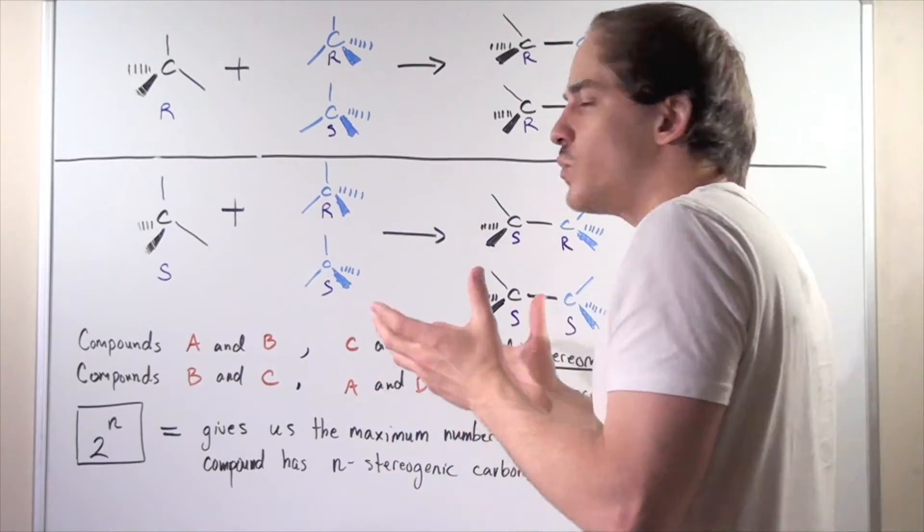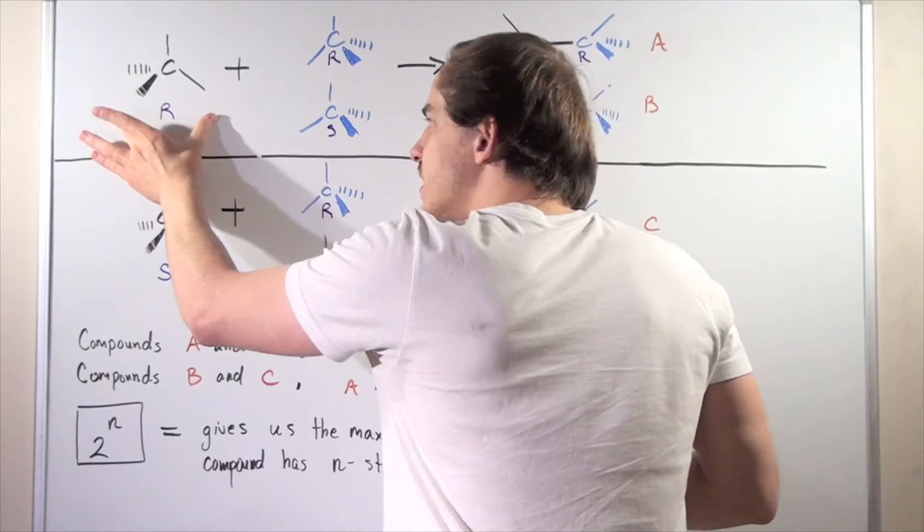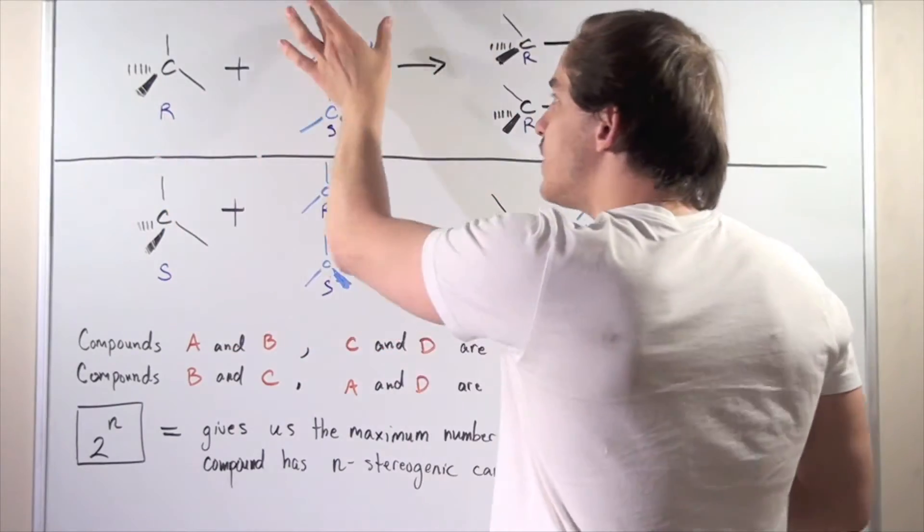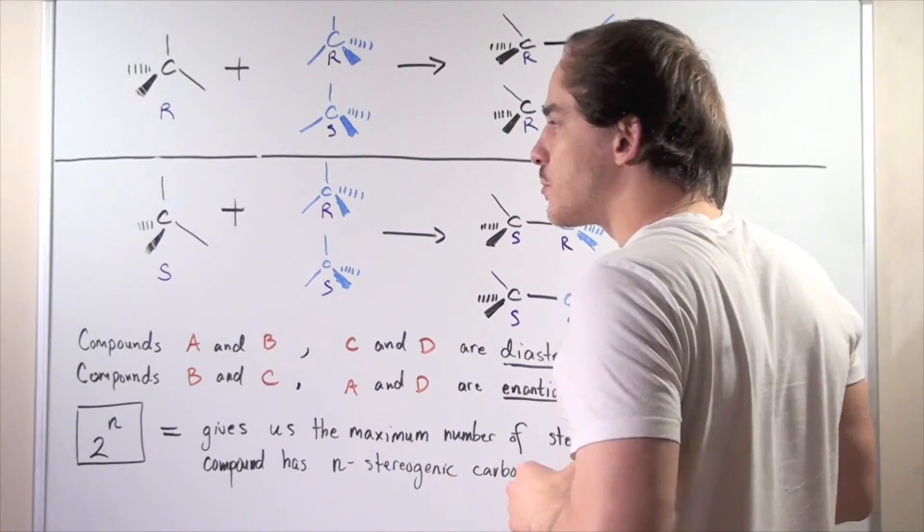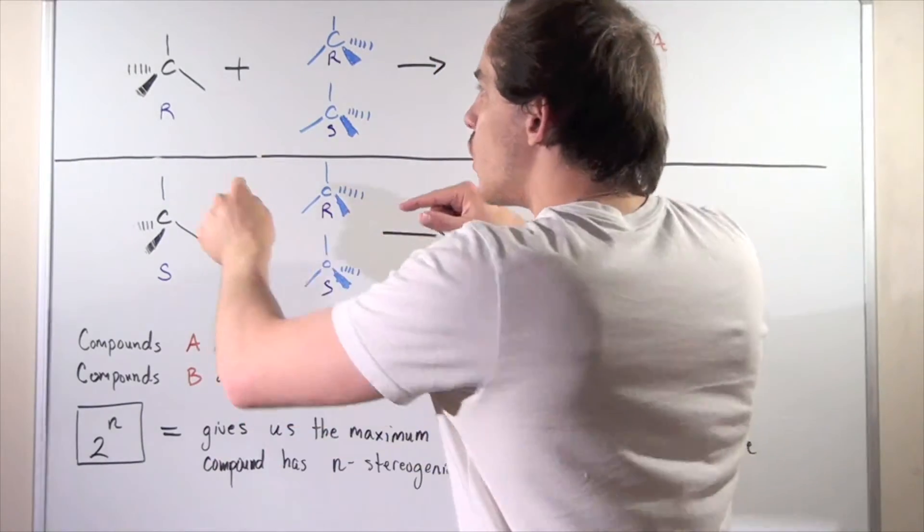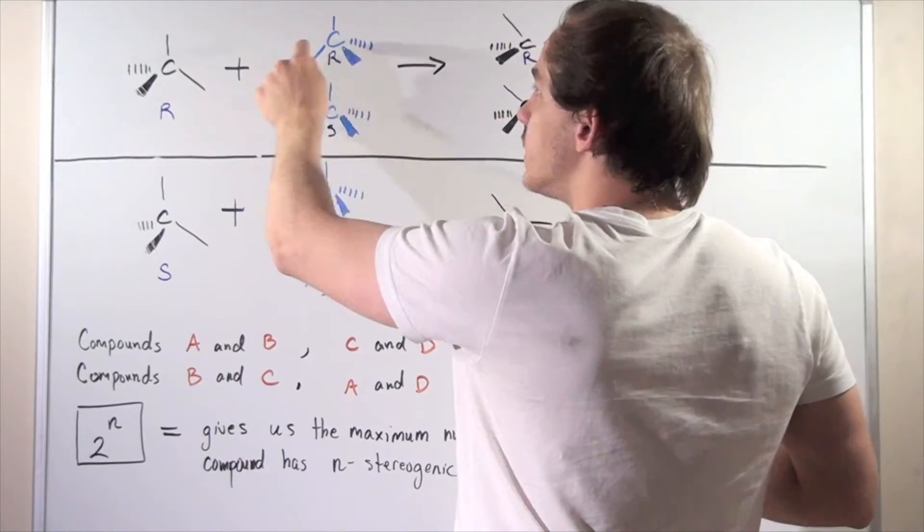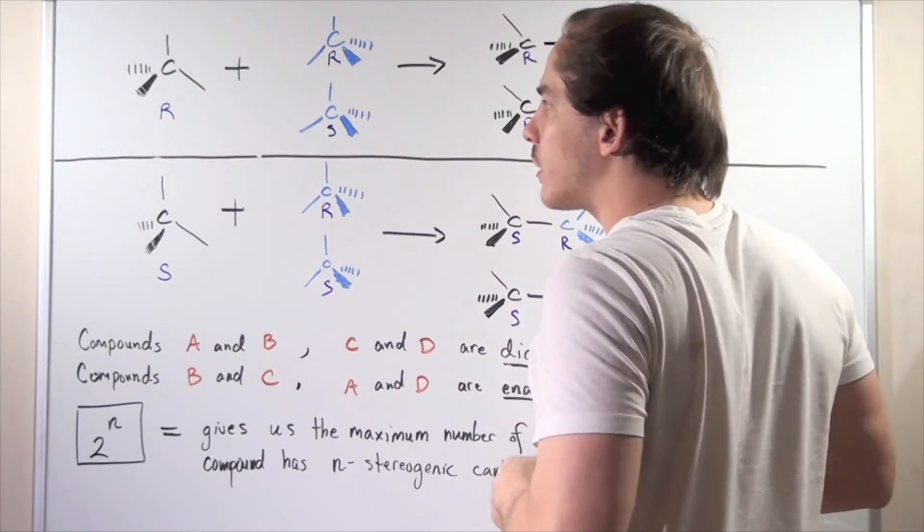So let's suppose we have a reaction. A reaction takes place between this R enantiomer and these two R and S enantiomers. We're not too worried about the mechanism but we should know that a bond is formed between the carbon, this stereogenic carbon and these stereogenic carbons.